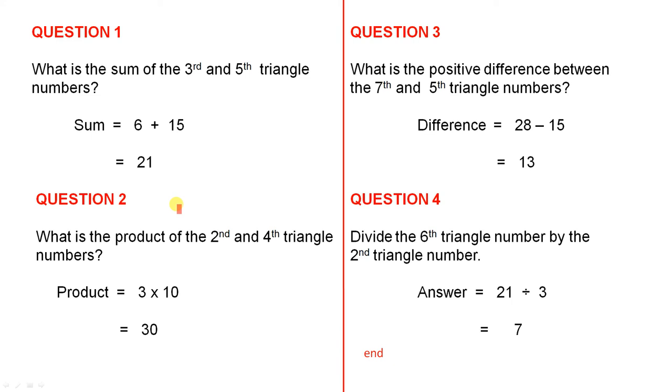What is the product of the second and fourth triangle numbers? 3 times 10 gives you 30, because product means multiplication.